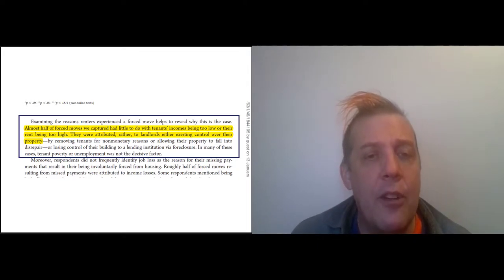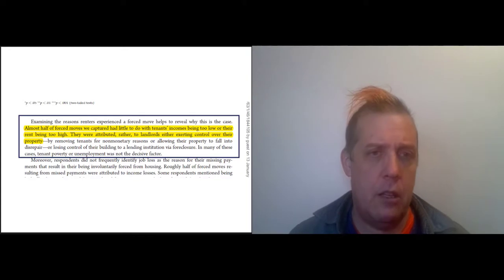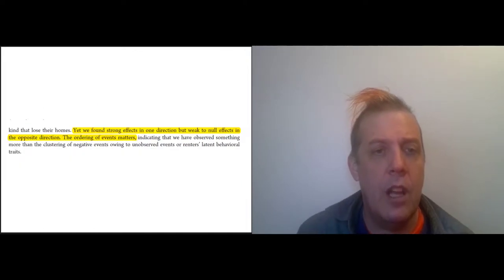They're being evicted rather because landlords are either exerting control of a property or losing control of their buildings to a lending institution. So exerting control by removing tenants—it doesn't have to do with the tenant at all, or whether or not they deserve to be evicted. It has to do with the politics that's going on with the landlord. So what you see is eviction happens for some other reason that has nothing to do with a tenant—like the building being bought out—and then that leads to job loss. So they find strong effects going in one direction, but weak to null effects going the other. The ordering of the events matters.